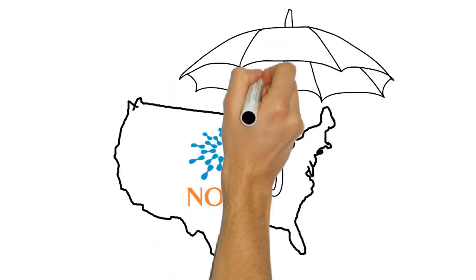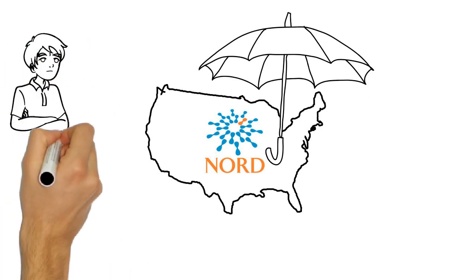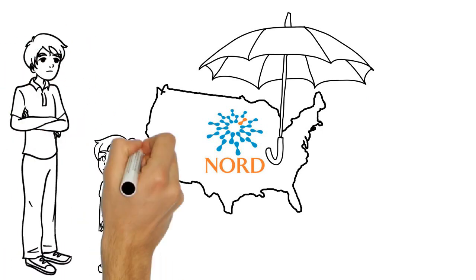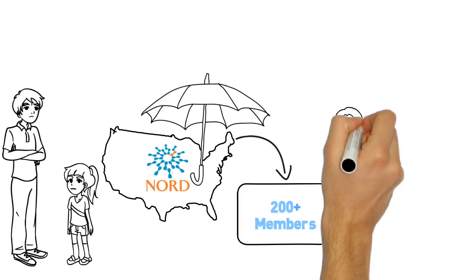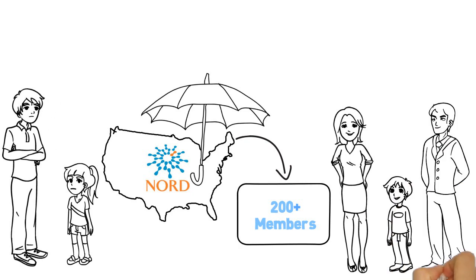The National Organization for Rare Disorders, NORD, is an umbrella organization representing all people affected by rare diseases. NORD and its more than 200 member organizations are committed to improving the lives of individuals and families affected by rare diseases.